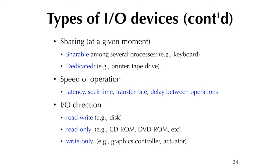Sharing means a device may be shareable among several processes — keyboard, camera, microphone, and speaker are examples. Some devices may be dedicated in the sense that while one process is using it, it locks out everybody else. For example, printing: the process doing the printing locks the printer for the duration. Similarly, tape drive copying is usually not shared among several processes at a given moment.